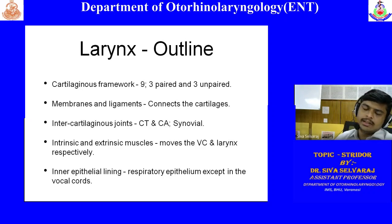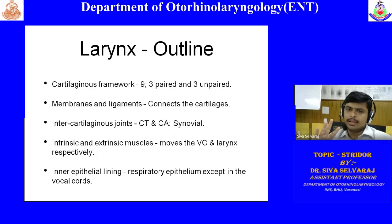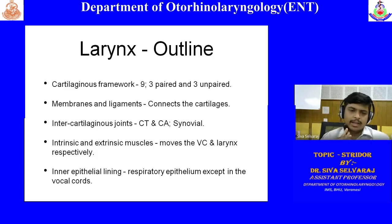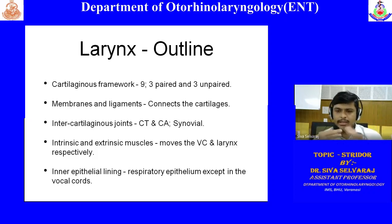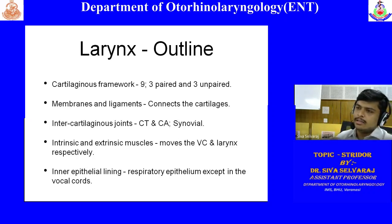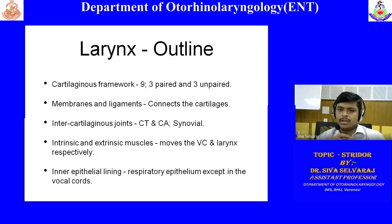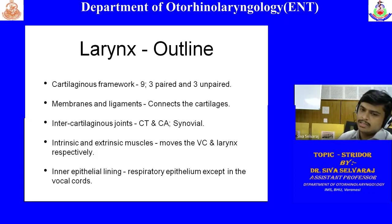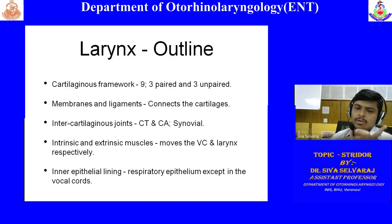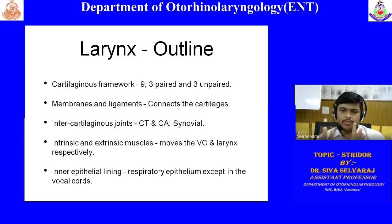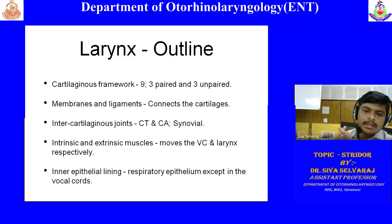The larynx has a cartilaginous or skeletal framework. There are a total of nine cartilages — three unpaired and three pairs, making six paired cartilages. All the cartilages are connected or covered by ligaments and membranes. At two points there are proper synovial joints: a set of cricothyroid joints on both sides and a set of cricoarytenoid joints on both sides.